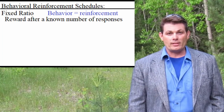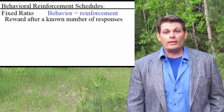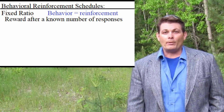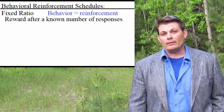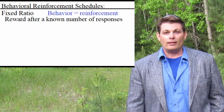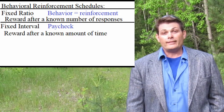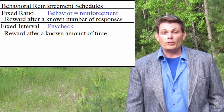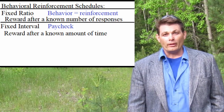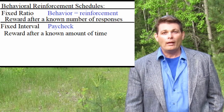The first reinforcement schedule is called fixed ratio — you get a reward for a known number of times of the behavior. For example, if every time you turn in an assignment you get 20 points, then you're getting rewarded every time. The second type is a fixed interval, which means a known amount of time passes before you get the next reward. For instance, a paycheck — you get it every two weeks and you know it's coming.